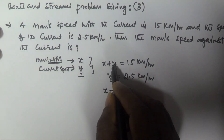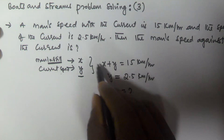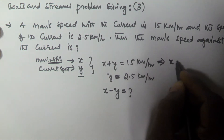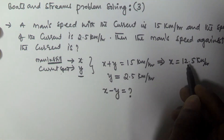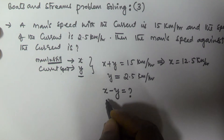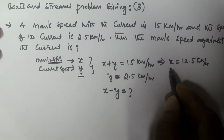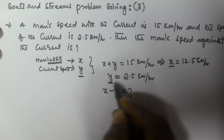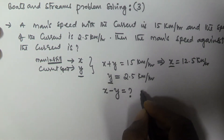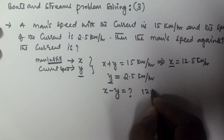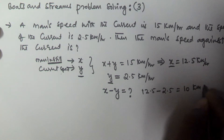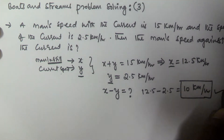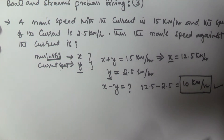To find x, we substitute y = 2.5 into x plus y = 15, giving x = 12.5 kmph. Then the man's speed against the current is x minus y = 12.5 minus 2.5 = 10 kilometers per hour. I hope you got this one.